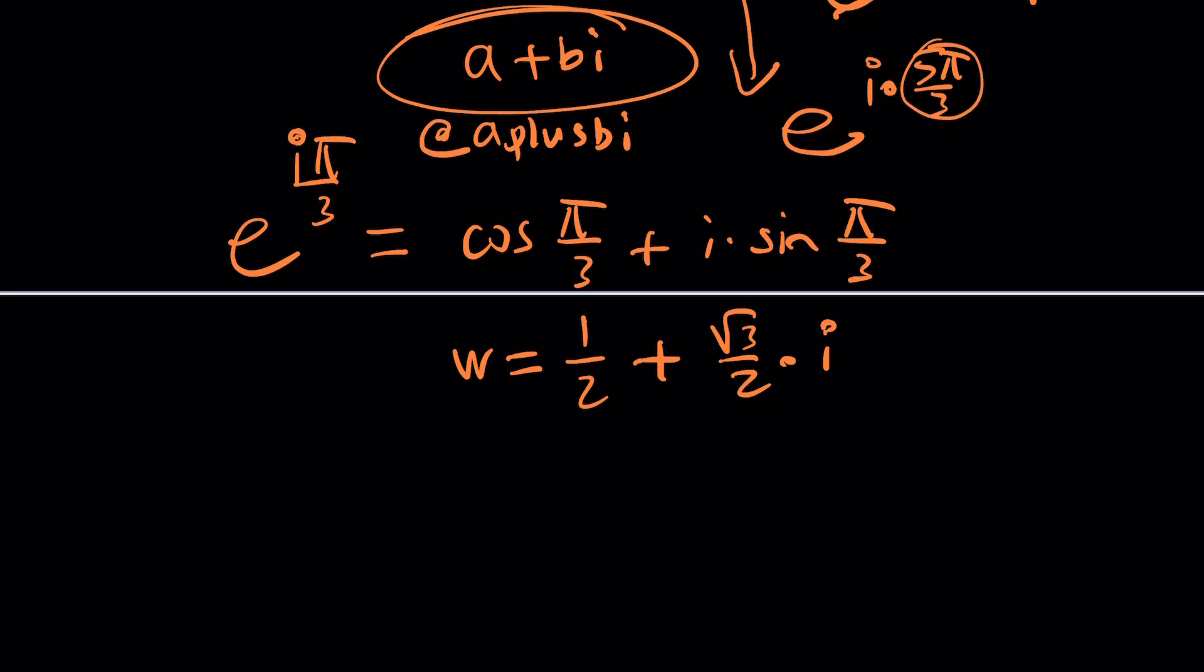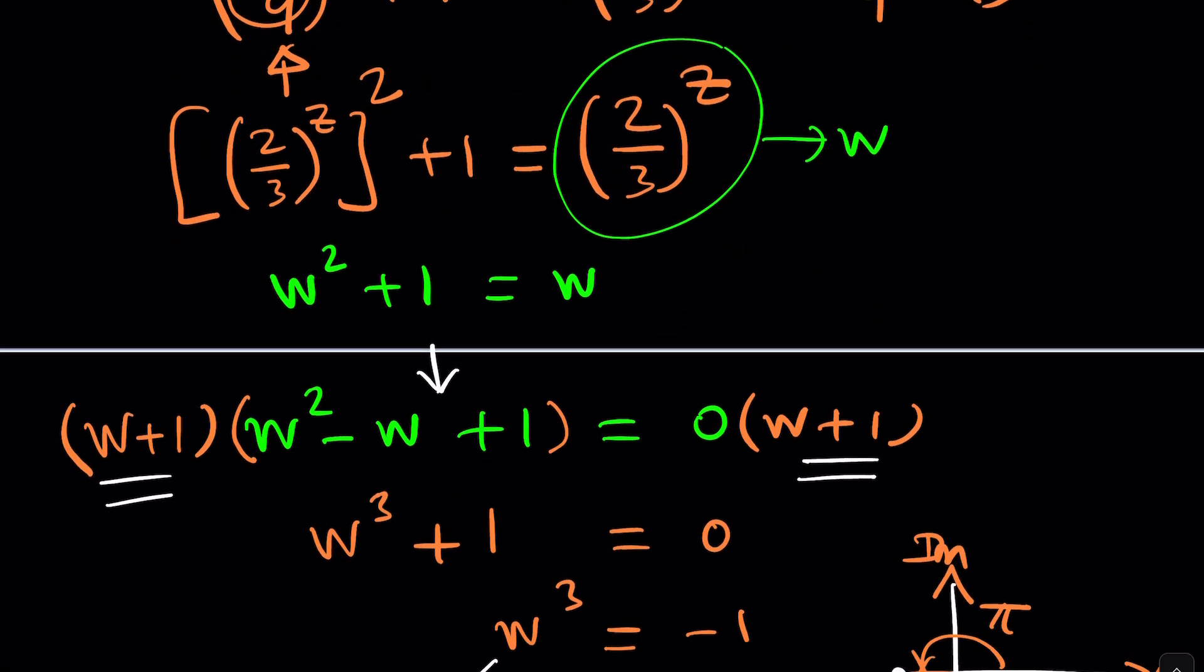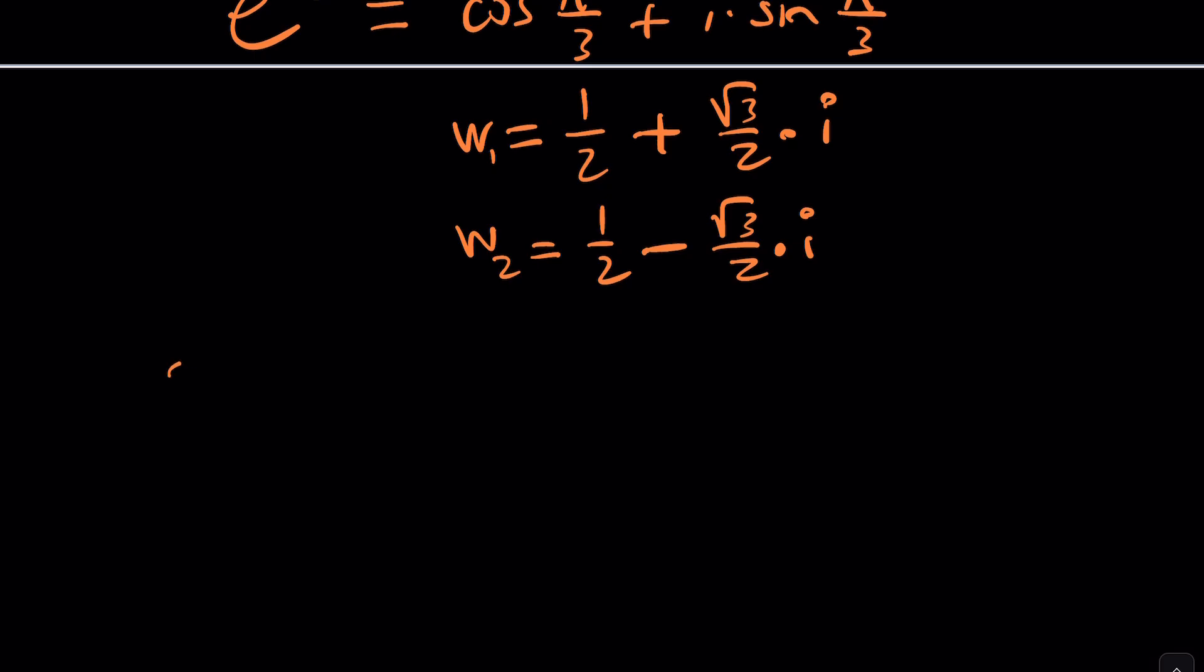Sometimes people will write it as a plus ib, but I write it as a plus bi because it's the name of this channel, A plus bi. This is just one of the solutions, but it's a solution for w. What about the other w value? It's just 5 pi over 3. And if you think about 5 pi over 3 and pi over 3, they add up to 2 pi. In other words it's kind of like negative pi over 3. So what's going to happen is the cosine value is going to be the same, but the sine value is going to be negated or reflected over the x-axis. So those are the values for w. But guess what? W is not what we're looking for.